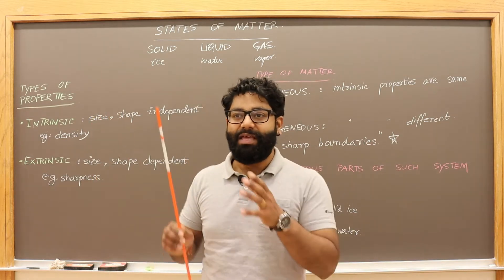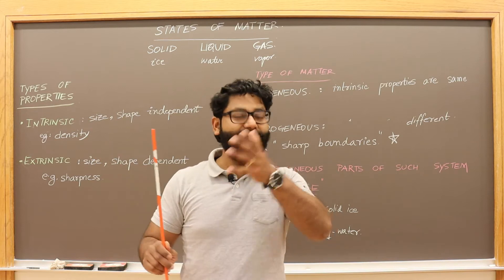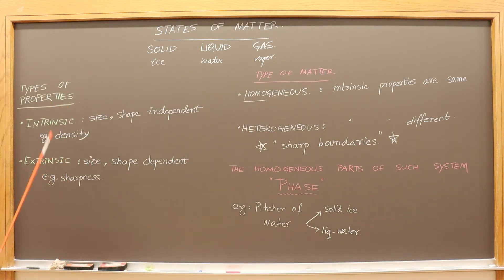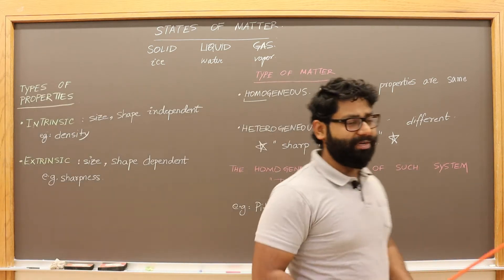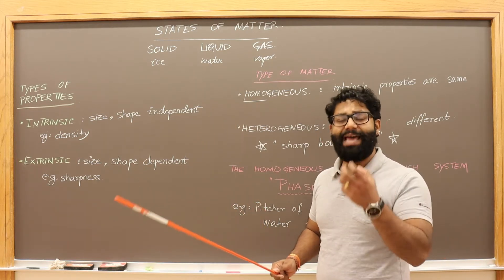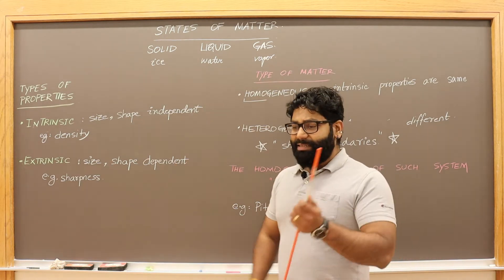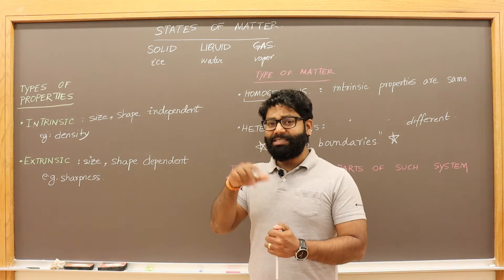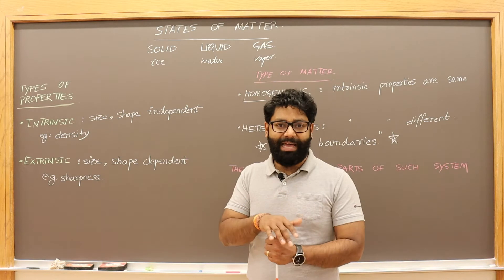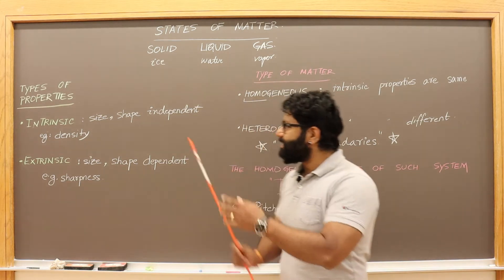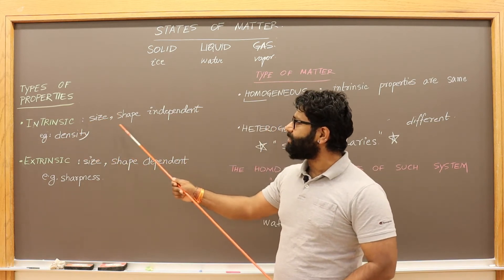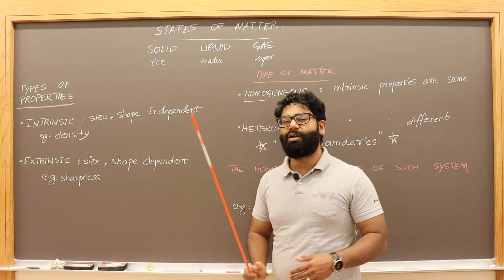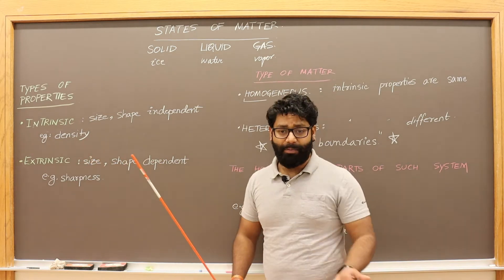Now these are some simple concepts — how to recognize and differentiate between these three states of matter. Let's look into some properties that will be helpful for us to understand. These properties are called intrinsic or extrinsic properties. Intrinsic properties are those which do not depend upon the shape and size of the object. For instance, the density of the material — say aluminum, whatever the blade is made of — does not depend on how big or sharp the knife is. So density is an intrinsic property, which is size and shape independent. Another good example of an intrinsic property is the refractive index.